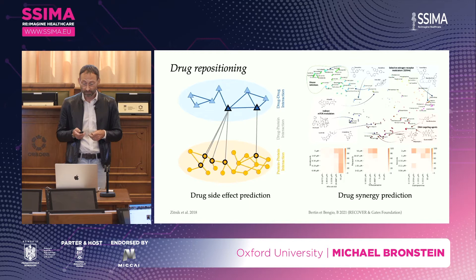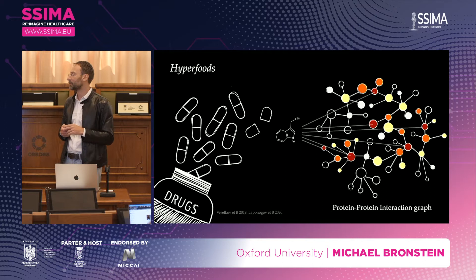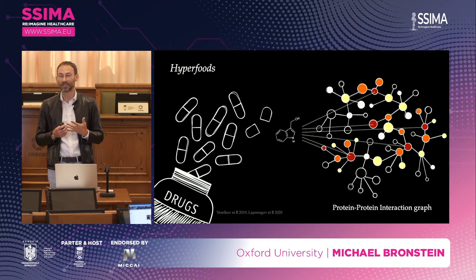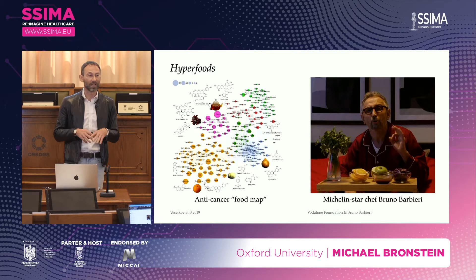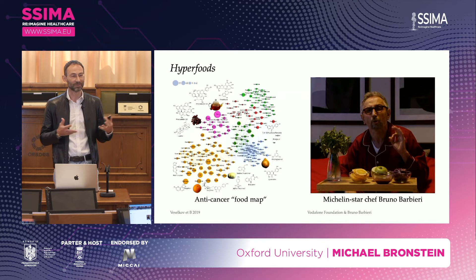Taking similar approaches to the domain of nutrition, we could predict potential anti-cancer or antiviral effects of compounds found in food. As you probably know, food — especially plant-based food — contains compounds from the same chemical classes as molecules used for drug therapy, especially in cancer treatments. This allowed us to create a map of different compounds and their potential health applications. We also collaborated with star chefs using these compounds to get creative insight into how future nutrition could work.